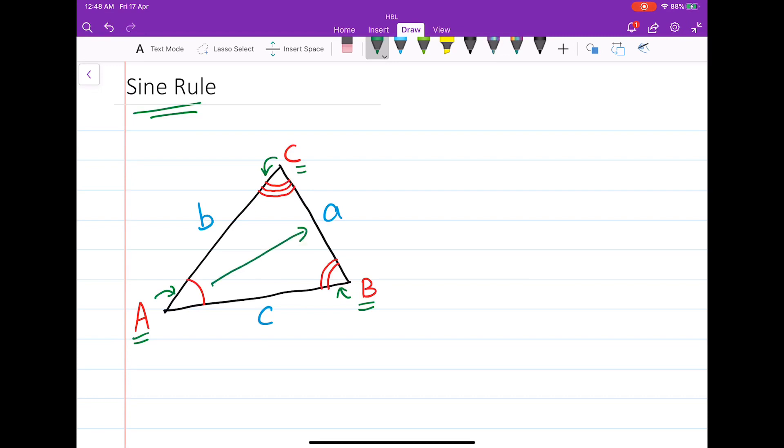Opposite of angle A, using capital letters, is the length a, the side length written as a small letter. Opposite of angle B is this length b, written in small letters again. And opposite of angle C is this length c. Now, sine rule states that the sine